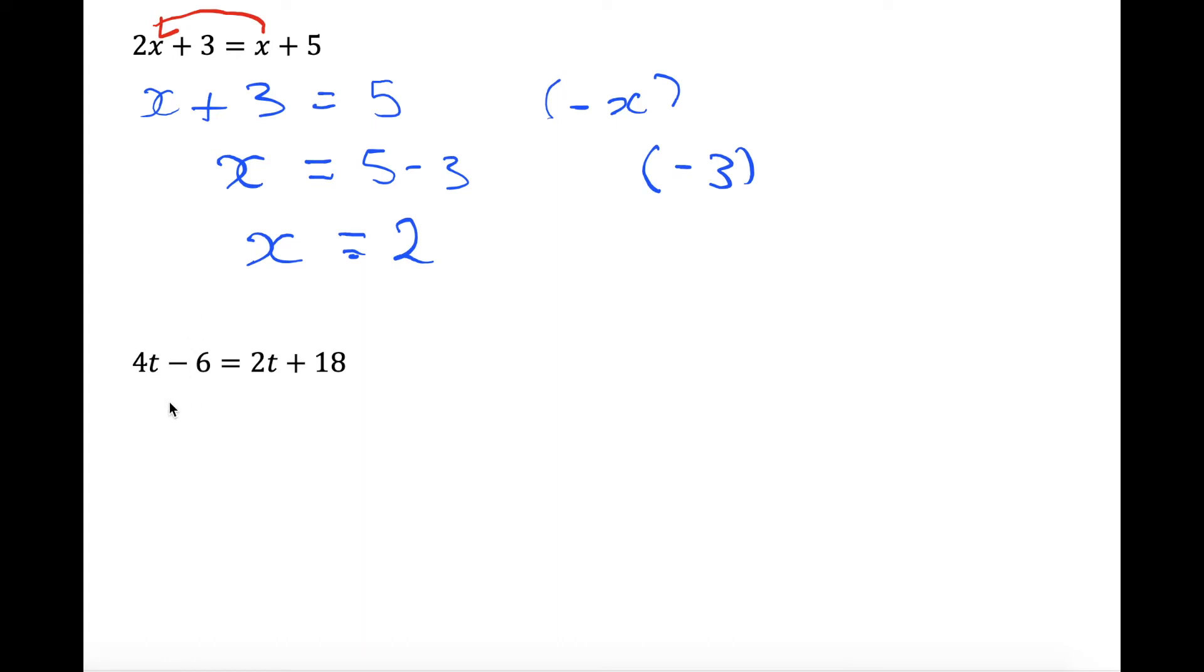So first we want to get our t's all on one side. 4t is larger than 2t so we want to move to the left hand side again. So we're going to minus 2t from both sides. So 4t minus 2t is 2t, and then minus 6 equals, so 2t minus 2t is 0. So we're left with 18.